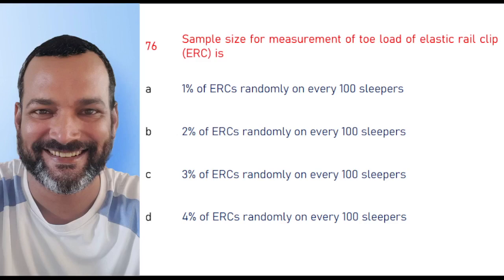Welcome to our next part of the video. Sample size for measurement of toe load of elastic rail clip is: the right answer is 1% of ERC randomly on every hundred sleepers.